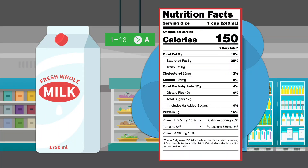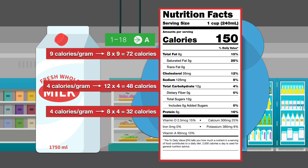Going one step further, we can see how these concepts play out in a product like milk. Whole milk provides a nice blend of all three macronutrients with 8 grams of fat, 12 grams of carbohydrates, and 8 grams of protein in one cup. Using what we learned about the number of calories per gram, we can calculate the total calories by multiplying 8 grams of fat by 9 calories per gram, and 12 grams of carbohydrates and 8 grams of protein by 4 calories per gram each. When you add all those results together, the total is 152 calories, which gets rounded to the nearest 10 to keep it simple.